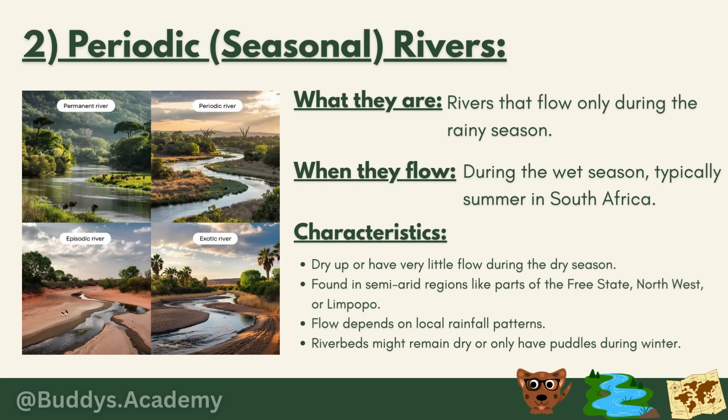Periodic rivers flow during the wet season, typically summer in South Africa. They dry up or have very little flow during the dry season, and are found in semi-arid regions like parts of the Free State, the North-West or Limpopo. Their flow depends on local rainfall patterns and their riverbeds might remain dry or only have puddles during winter. In the diagram, the upper right image represents a periodic river — since it is flowing, that picture was taken during the wet summer season.